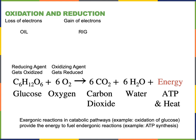Glucose is the reducing agent that gets oxidized as electrons are transferred from glucose to oxygen. And oxygen is the oxidizing agent that gets reduced as it accepts the electrons that came from glucose.